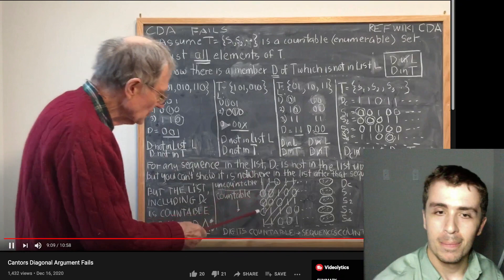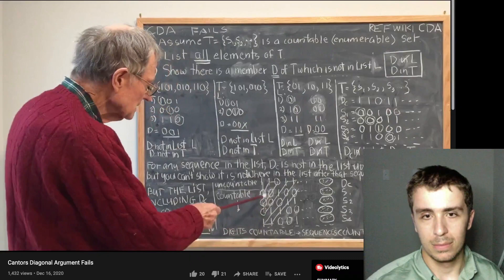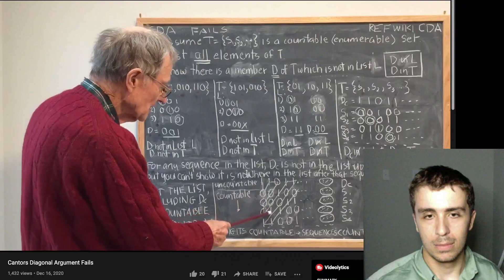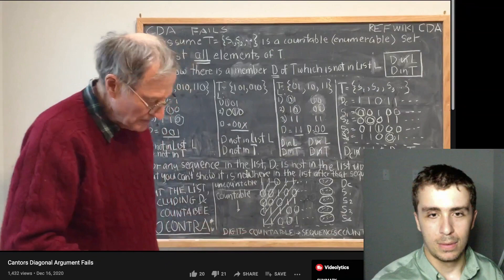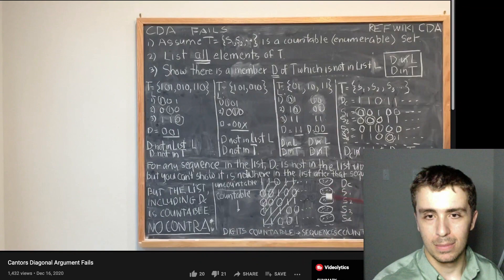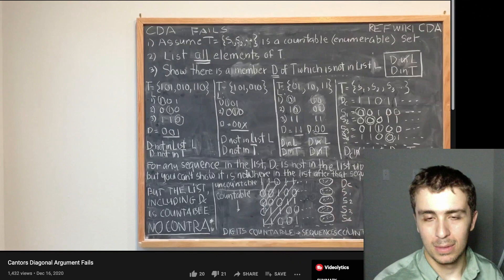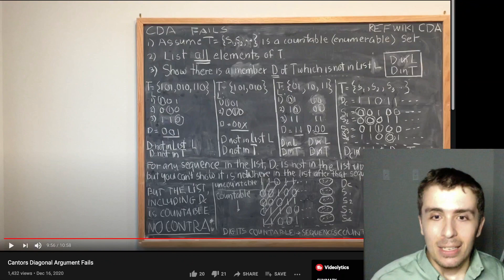The video claims this diagonal counting procedure 'always lets you count all elements in any array of this type,' then concludes that if you can count all the digits in the array, you can certainly count the number of sequences. That is completely wrong. Just because you can count the elements within each set does not mean you can count the number of sets.